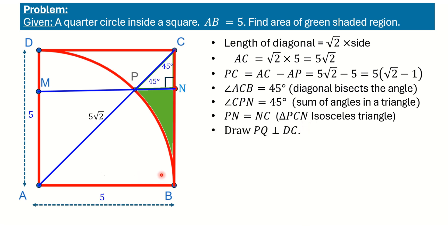Now let's do some construction. From point P, I draw a perpendicular PQ on line DC. We observe that angles at P, Q, C, and N are all 90 degrees, and since PN equals NC, the quadrilateral PQCN is a square.